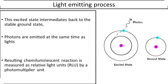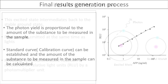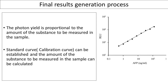The excited state intermediates return to a stable ground state by emitting photons. Luminescence is measured as relative light units by a photomultiplier unit.